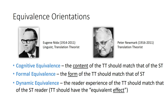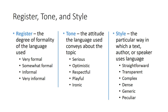Register, tone, and style are byproducts of language use that we perceive as readers, and they're important when analyzing a source text and producing the target text. Register refers to how formal or informal the language in a text is. Tone is the attitude that the language conveys relative to its topic — for example, is a medical brochure about vaccinations serious, neutral, playful, or ironic? Tone is attitude.